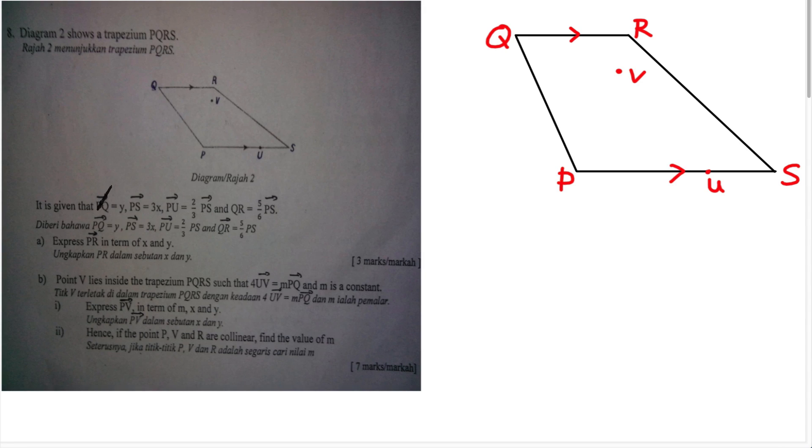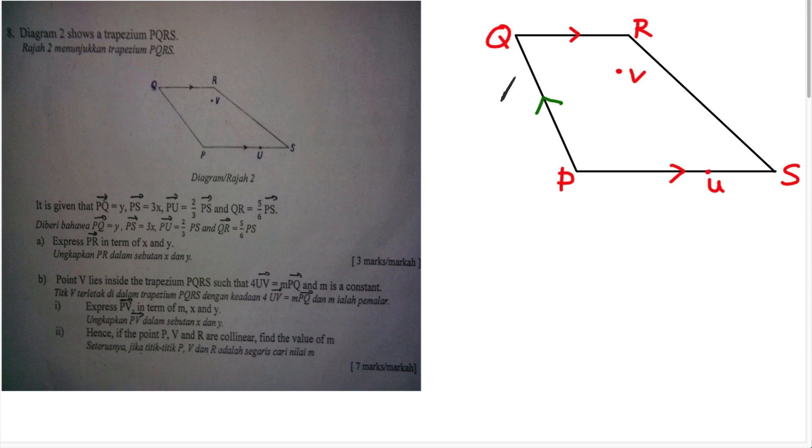You will see a diagram that gives you some vectors. The first thing is PQ equals y in vector form — the arrow is very important. PQ means from P to Q, so from P to Q you get y. Then PS equals 3x, meaning from P to S you get 3x.